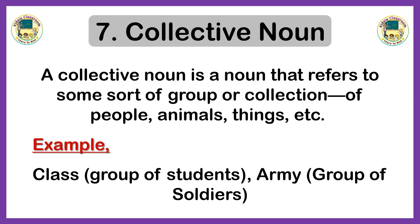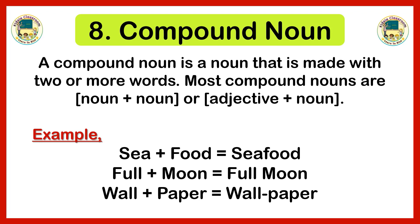Next is the collective noun. A collective noun is a noun that refers to some sort of group or collection of people, animals, or things. For example, class — a class is a group of students. Similarly, army is also a collective noun because an army is a group of soldiers. These are examples of collective nouns.